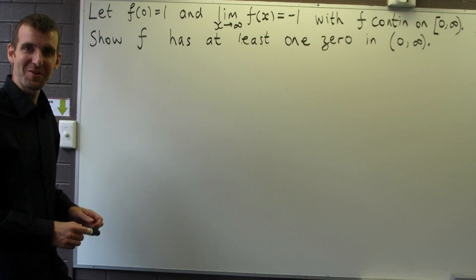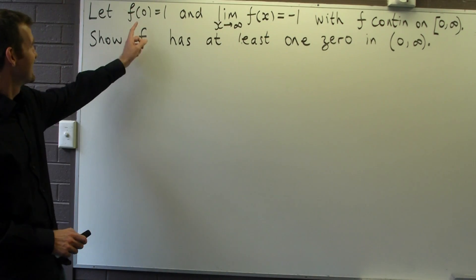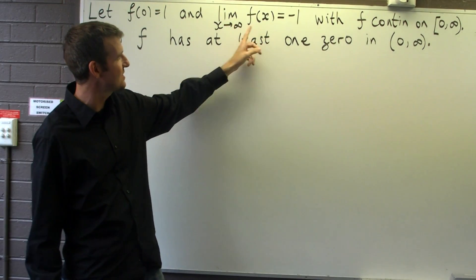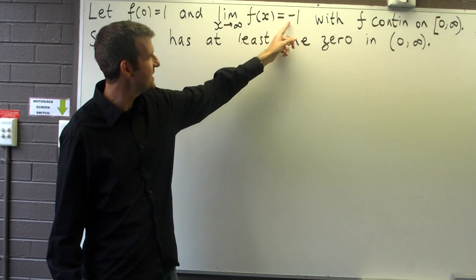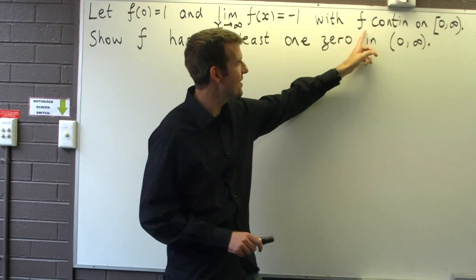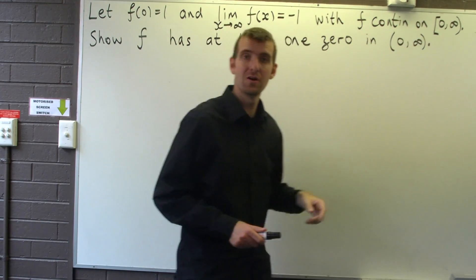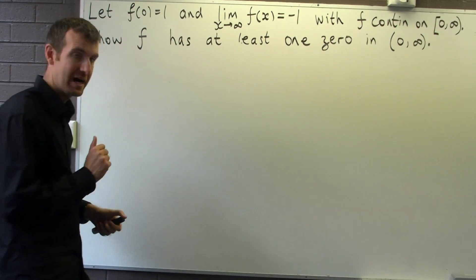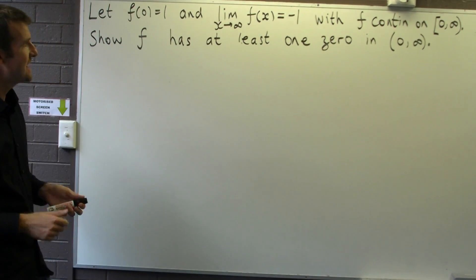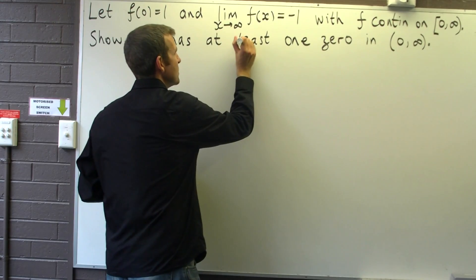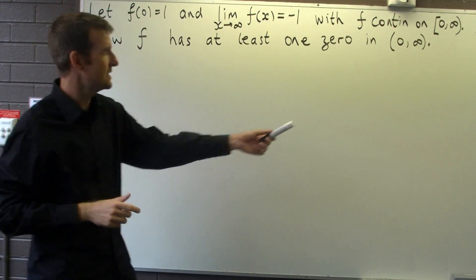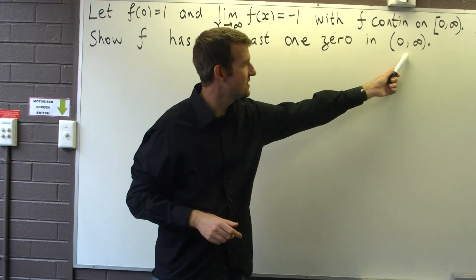Here we're faced with the following problem: f of 0 equals 1, the limit of this function as x goes to infinity equals negative 1, and f is continuous on the non-negative half line. We're asked to show that f has at least one zero in this interval.